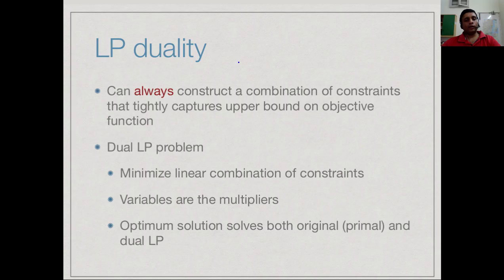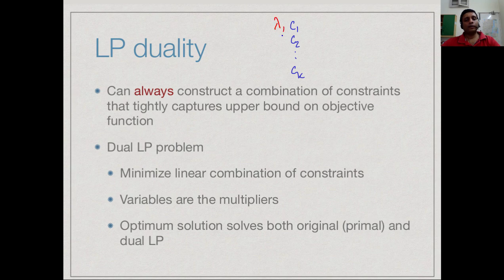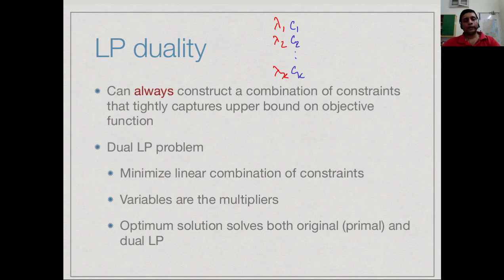It turns out that fortunately, this is not a coincidence. It turns out you can always construct such a combination. If I have constraints c1, c2, these are my constraint equations, I can always find some combination. I can take some lambda_1 c1, lambda_2 c2, I can add this up. And then I can get from that some upper bound. That upper bound will actually tell me whether or not the solution I found is right. This is called a dual of the LP.